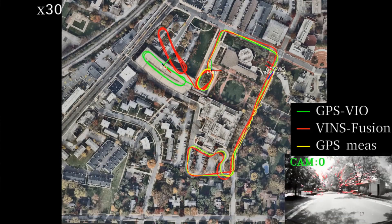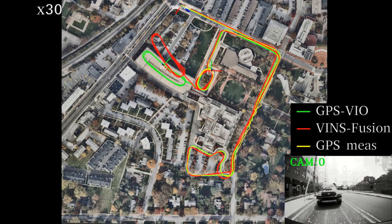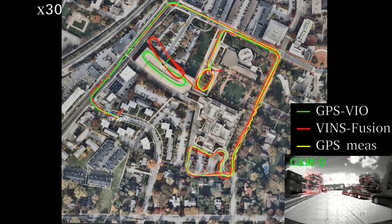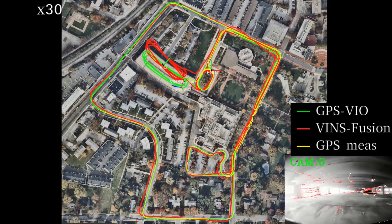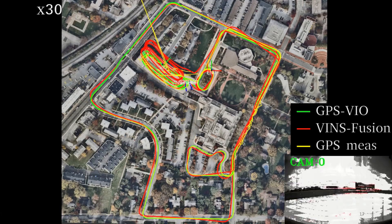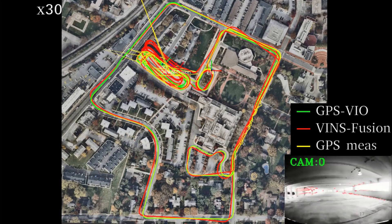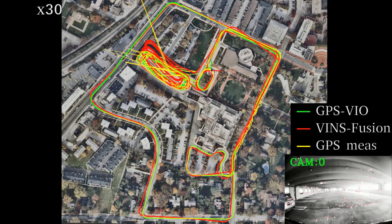The yellow line GPS spikes due to multipath, being indoors, or under trees. The proposed GPS-VIO system can robustly handle these measurements and perform accurate localization.